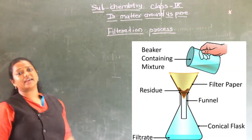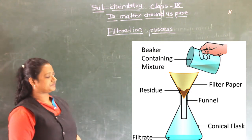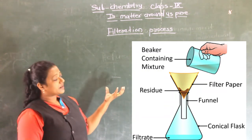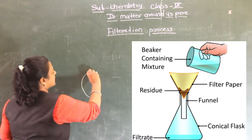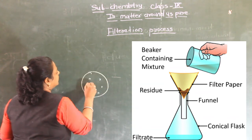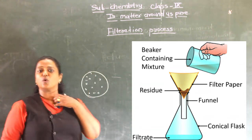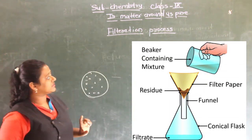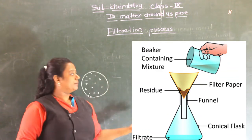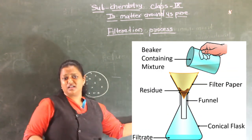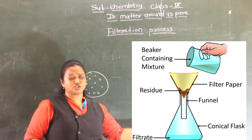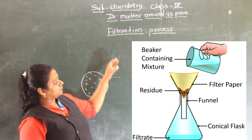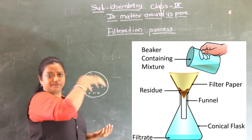So here is a diagram. With the help of this diagram I am going to explain filtration. There is a stand, and on top of it is placed a funnel. Above the funnel, a filter paper is kept. The filter paper has many small pores through which only liquid can pass. We make a cone of the filter paper, place it in the funnel, and below it we keep another vessel to collect the filtrate. We then pour the suspension onto the filter paper.